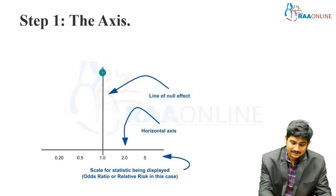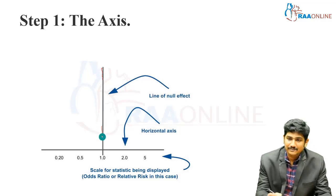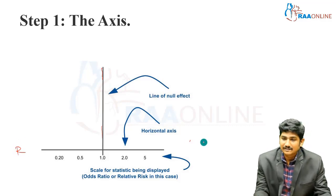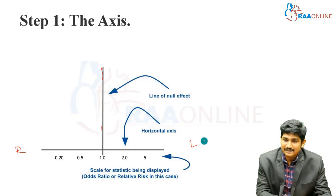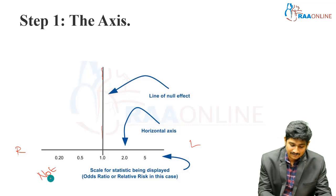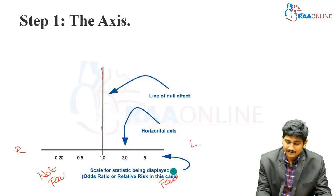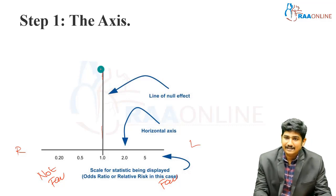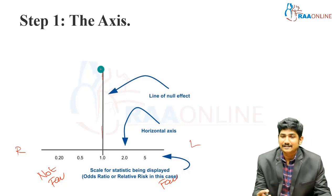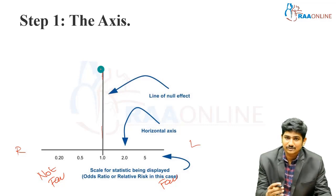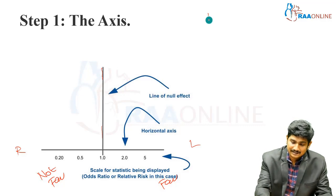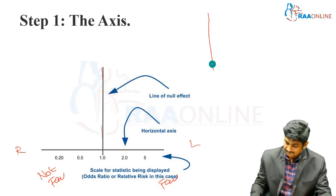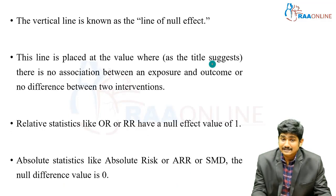When you first see a forest plot, you will see a straight vertical line. This straight vertical line is called the line of null effect. It divides the plot into the right and the left. One side is marked as favorable — your intervention is going to be beneficial — and the other side is not favorable. This central line is the line of null effect, meaning at that point there is neither harm nor benefit.